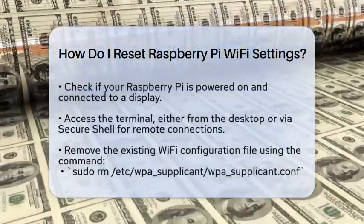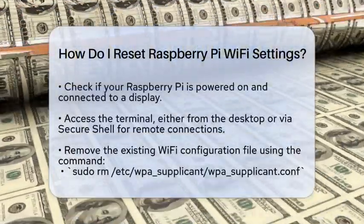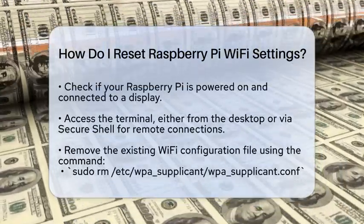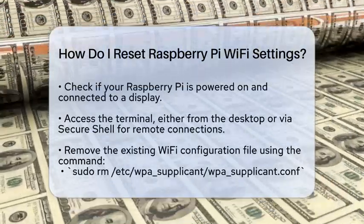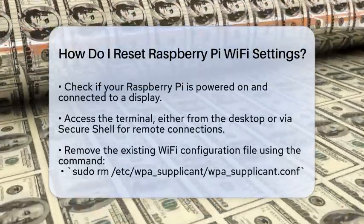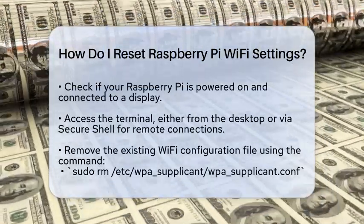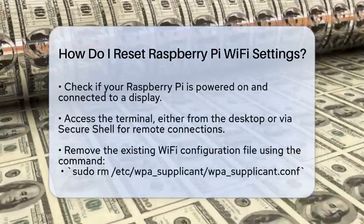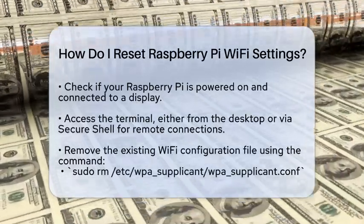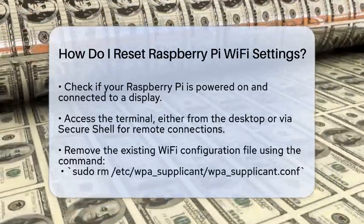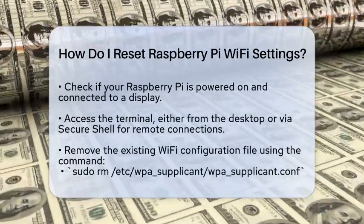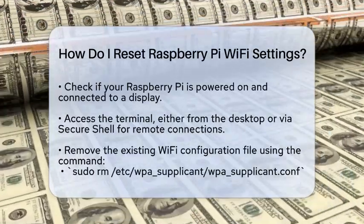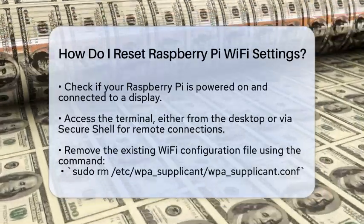If you have been experiencing connectivity issues with your Raspberry Pi, resetting the Wi-Fi settings might be the solution you need. Whether you are trying to connect to a new network or troubleshoot existing problems, knowing how to reset these settings can be very helpful.